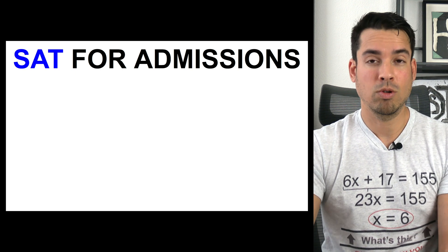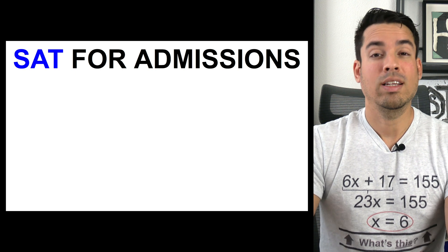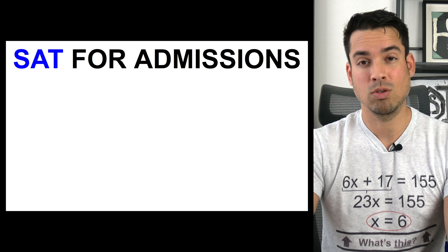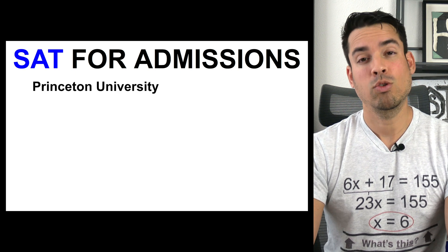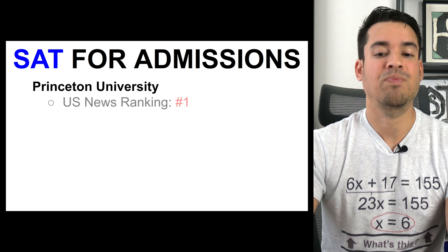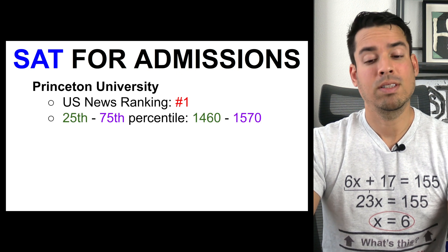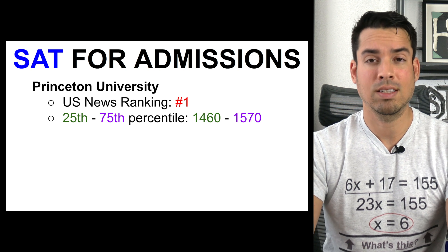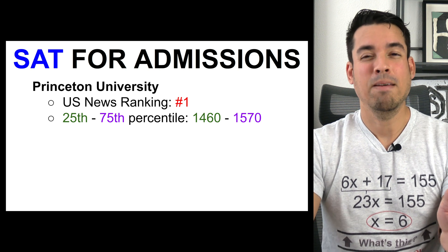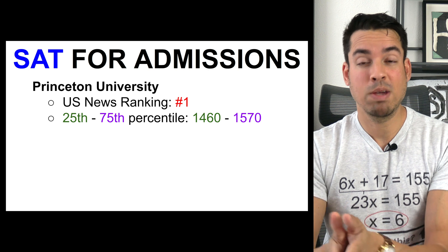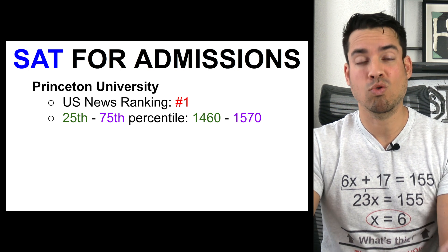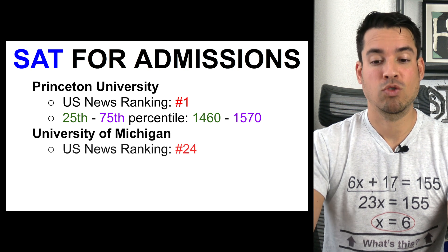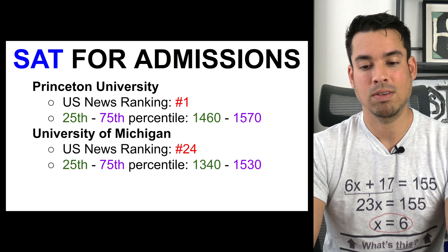We're going to go over some basic statistics pulled from US News and World Report that look at standard score zones when choosing to admit students at a few different universities. Princeton University, ranked number one, has a 25th to 75th percentile composite score of 1460 to 1570 — that's the middle 50 percent. For the University of Michigan, ranked 24th, the interquartile range is 1340 to 1530.